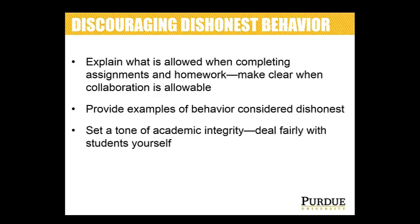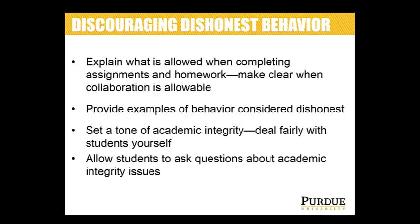Set a tone of academic integrity by dealing with students fairly. Sometimes we'll give students information that's wrong and they later figure that out — if we say they should have known better, they're going to feel like we're being shady with them. Deal fairly with students yourself and they're more likely to make an effort to have integrity in dealing with your assignments. You also want students to feel safe asking academic integrity questions. Don't hold their questions against them — give them answers and allow them to find out what's within the bounds of acceptability.